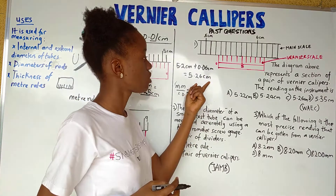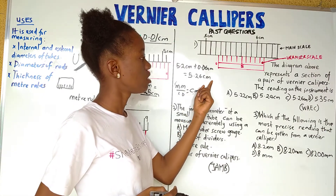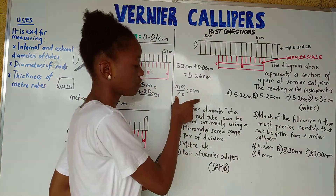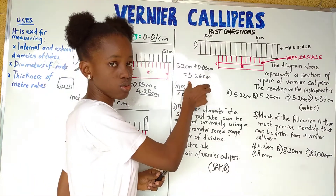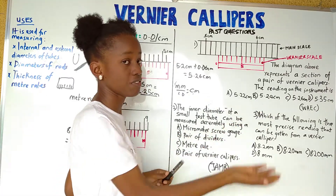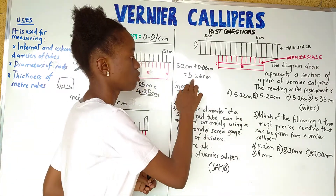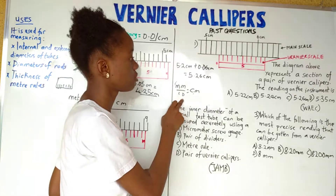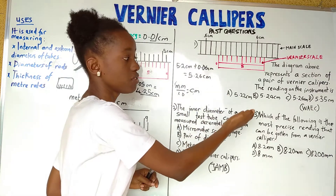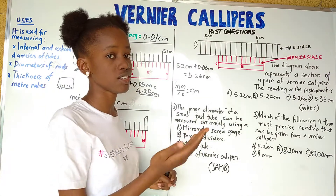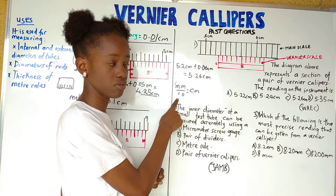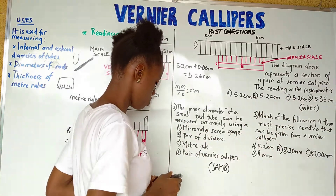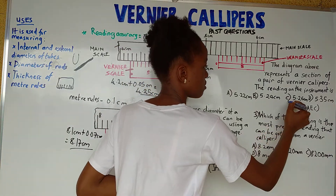We should always note to check the units. If values are given in millimeters, use the formula to convert. But here in this past paper question the values are in centimeters, so we read the answer straight away. If required to give the answer in millimeters, use the conversion formula. Our answer is 5.26 centimeters, which is option C. The correct answer is C.